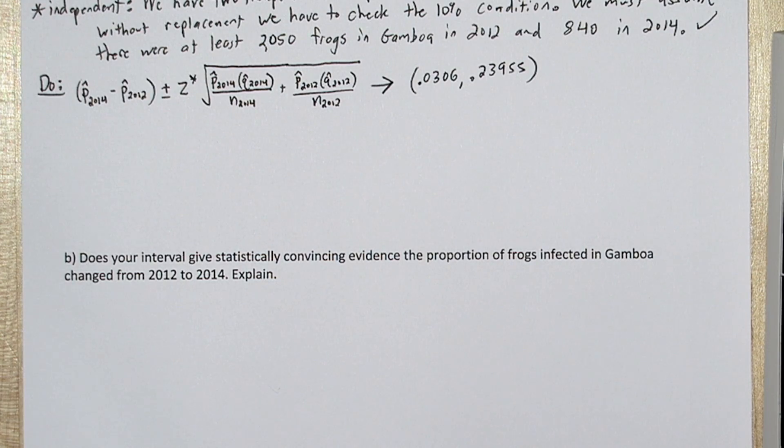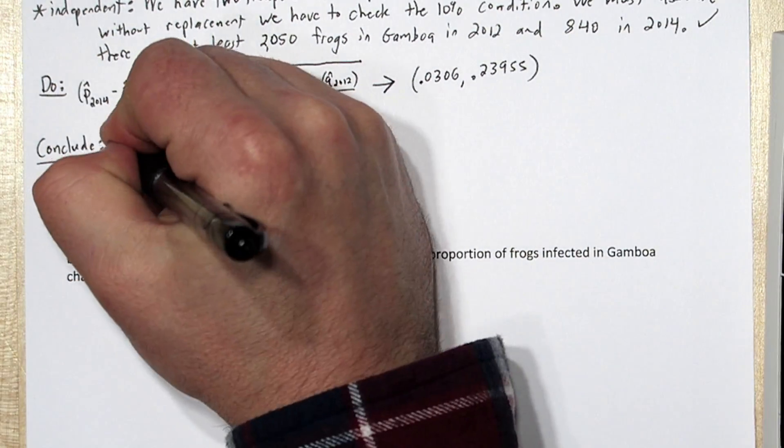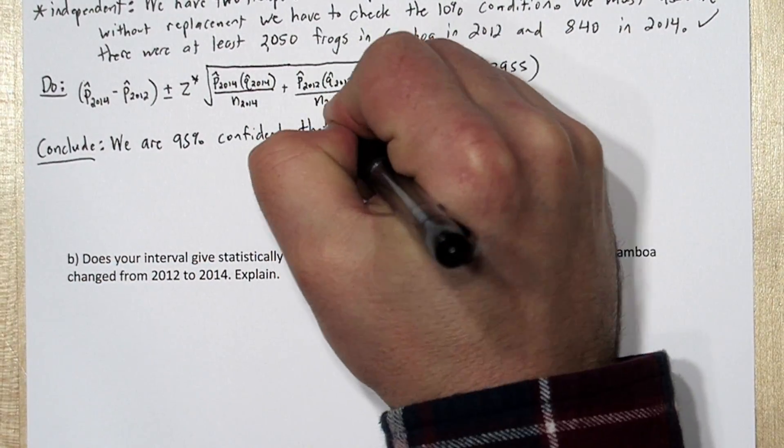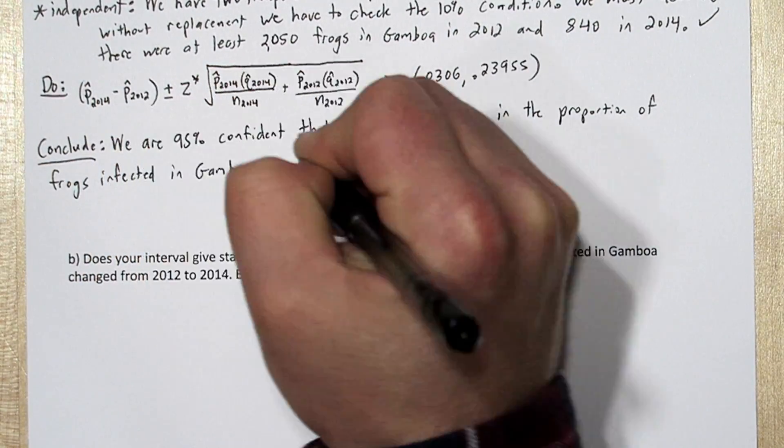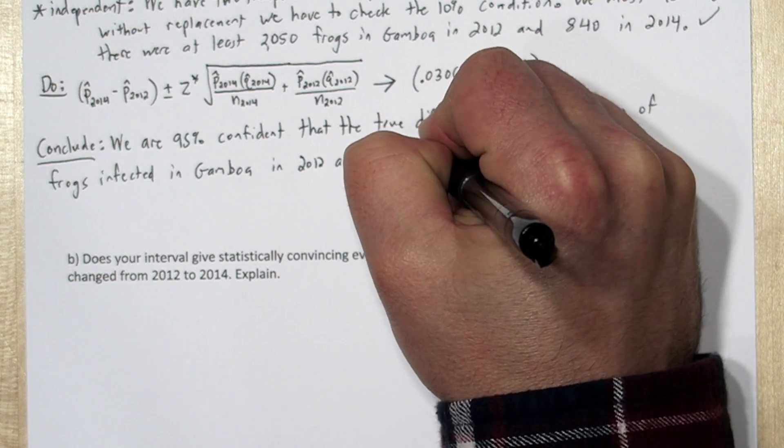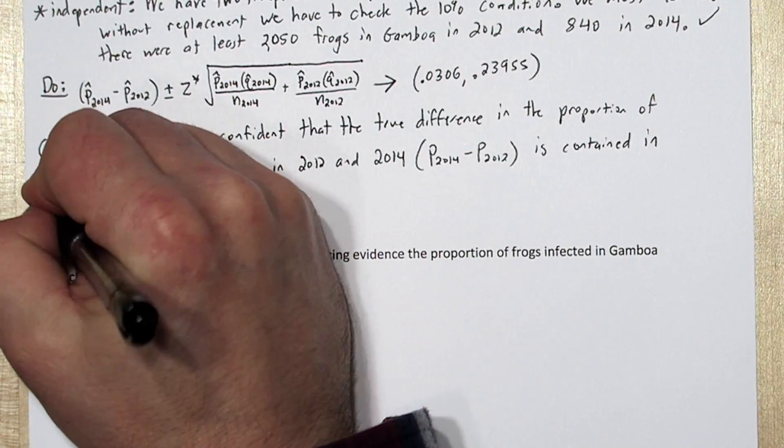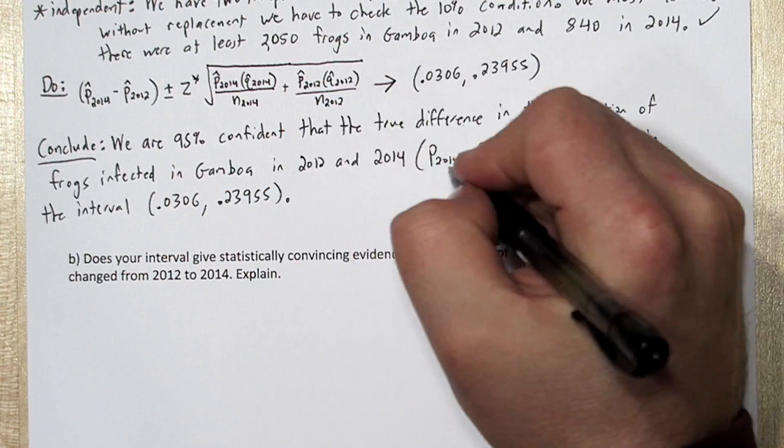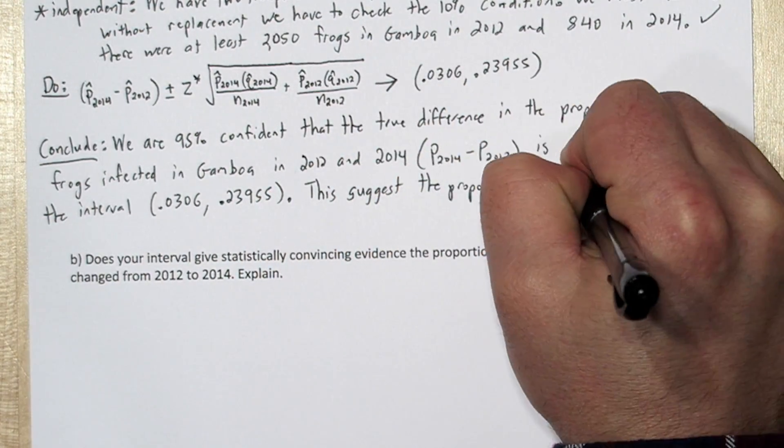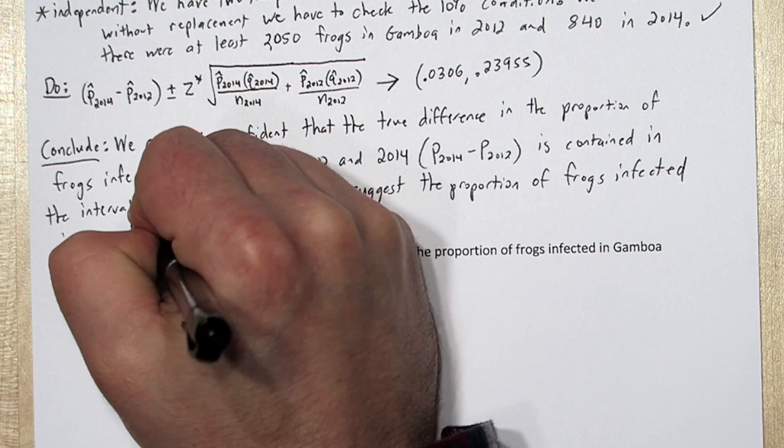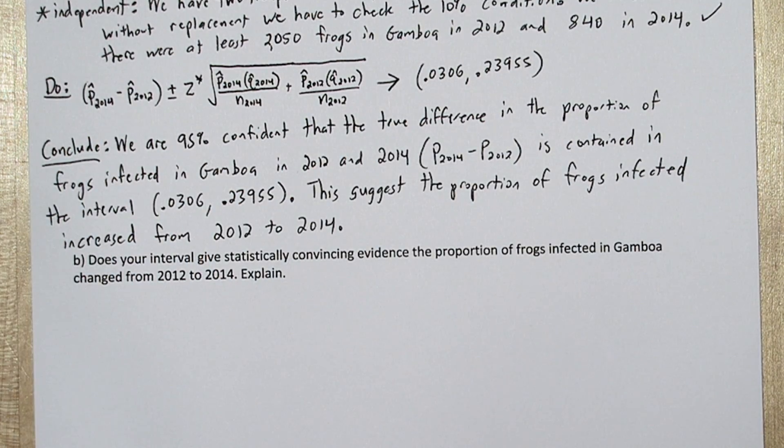Now we're ready to conclude. We are 95% confident that the true difference in the proportion of frogs infected in Gamboa in 2012 and 2014, the true proportion of 2014 minus the true proportion infected in 2012, is contained in the interval .0306 to .23955. This suggests the proportion of frogs infected increased from 2012 to 2014.